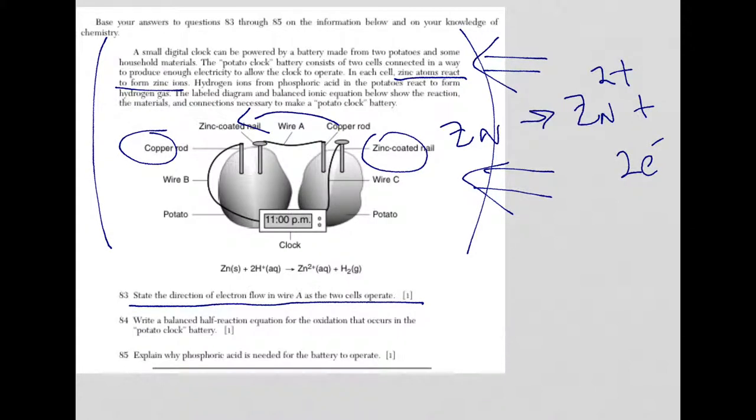Now, again, how do I know that? Well, zinc going from an oxidation number of 0 to plus 2 means that the zinc is being oxidized.